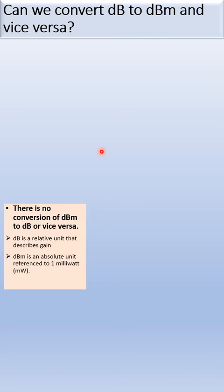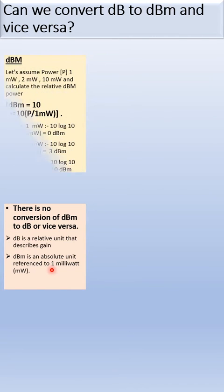There is no conversion of dBm to dB and vice versa, because dB is the relative unit and dBm is the absolute value. The dBm can be calculated by the formula: dBm = 10log₁₀(P/1mW).